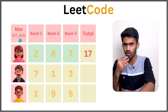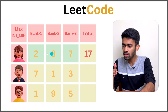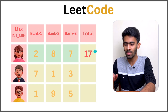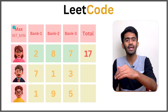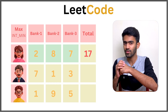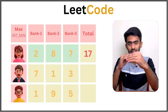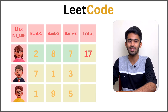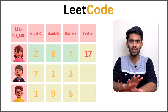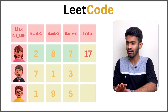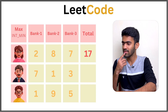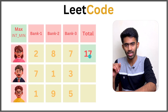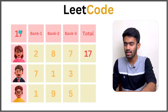The initial maximum is set to Integer.MIN_VALUE. If you calculate the wealth for a row already, and it is greater than the current maximum value, then you have the new maximum wealth. Essentially, we need the maximum row sum — that's what we're finding.